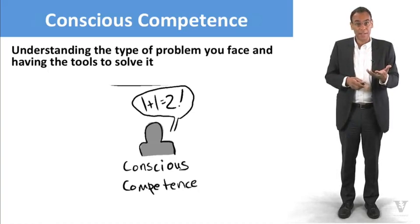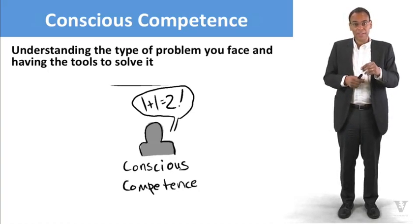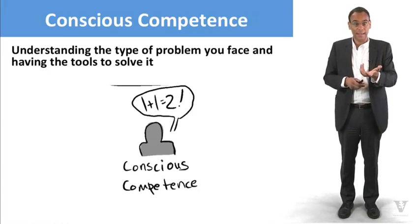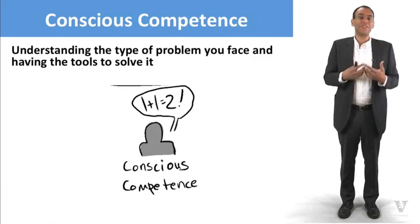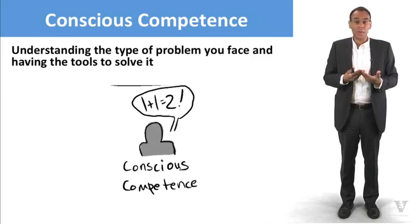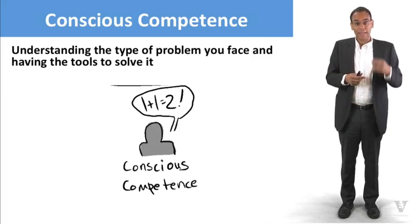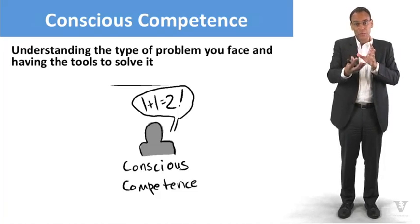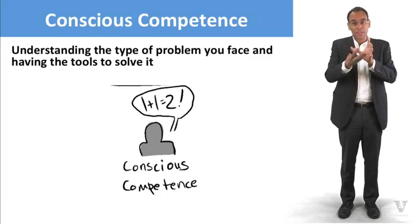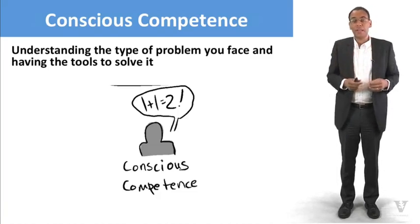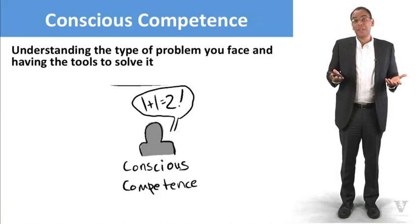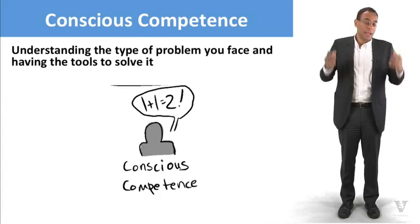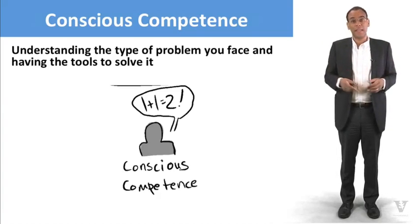Next, we'll make it to this conscious competence state. Conscious competence is when you understand the kind of problem that you face and you actually have the tools to be able to solve it. Lots of problems in engineering and science take this form. We have analysis, we have models, these tools that we can use to analyze the world and try to understand what it is we need to do in some situation. If you're an architect building a house, you could look up the tables for how thick the floor has to be, how thick the pillars have to be to hold this thing up.